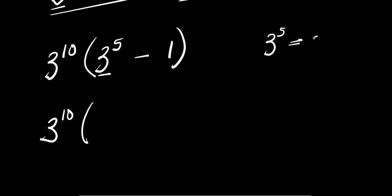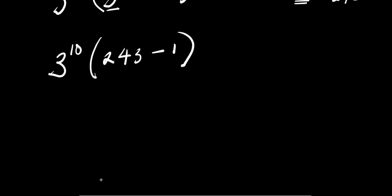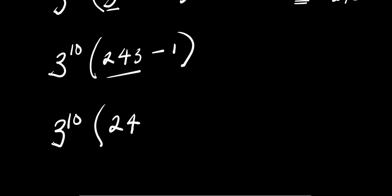Now, 3 to the power of 5 is 3 times 3 times 3 times 3 times 3. That is: 9, then 27, then 81, then 243. So we have 243 minus 1, which is 242. From here I have 3 to the power of 10 times 242.